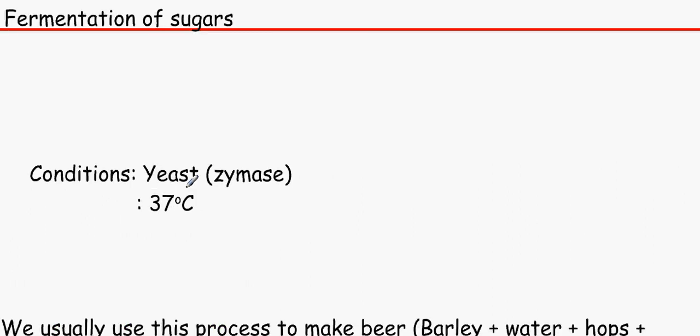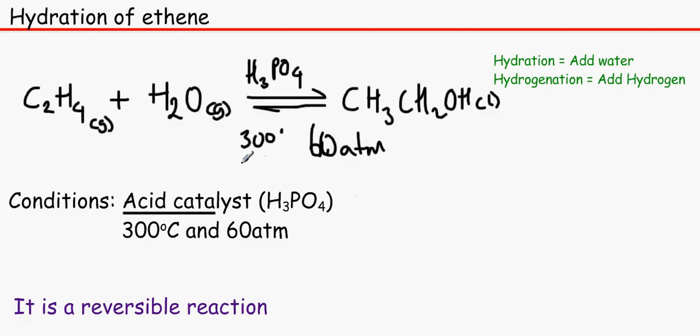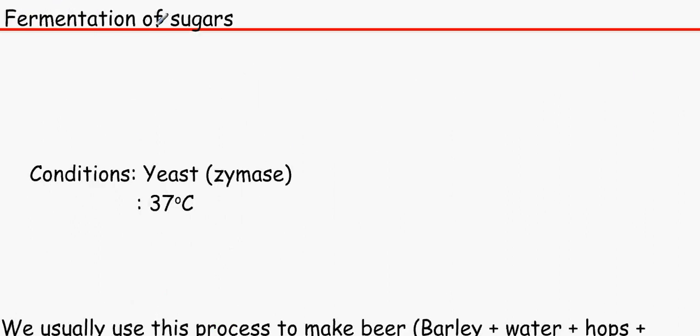The other one is fermentation of sugars, and I've got to say this is done industrially just because of the fantastically high temperature. You can't do that in your oven basically. This one, fermentation, this is a much lower temperature of 37 degrees Celsius. That means we can use it in developing countries and we can use it to make beer. I'll come back to that in a second.